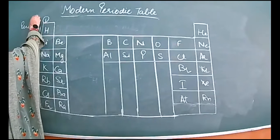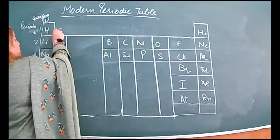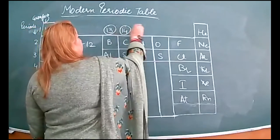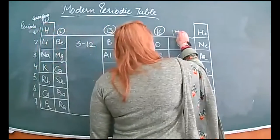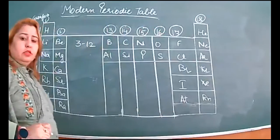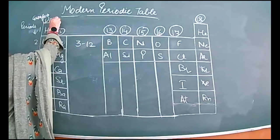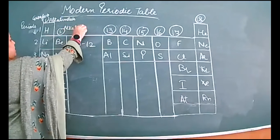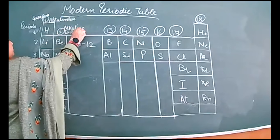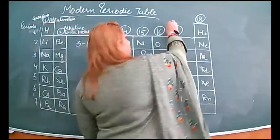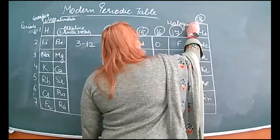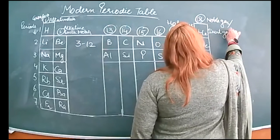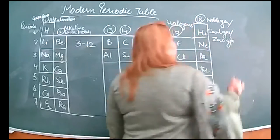There are 7 periods and 18 groups. Groups 1 and 2 are on the left, groups 3 to 12 in the middle (transition metals, not discussed now), and groups 13 to 18 on the right. The first group is called alkali metals, the second is called alkaline earth metals, the 17th group is called halogens, and the 18th group is called noble gases or inert gases, also known as zero group.